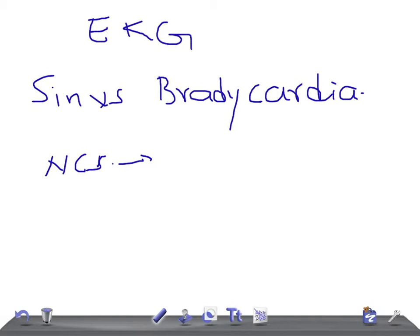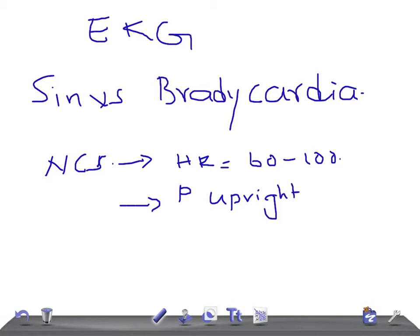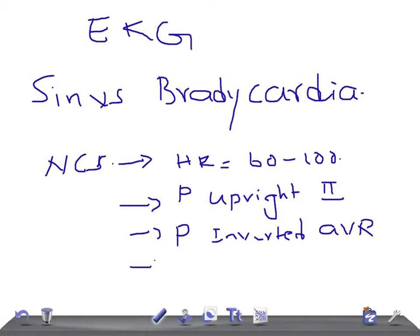To fulfill the criteria for normal cardiac sinus: the heart rate should be between 60 to 100 beats per minute, the P wave should be upright (positive) in Lead II, and inverted in aVR. Also, every P wave must be followed by a QRS complex. This is the basic thing you should never forget.